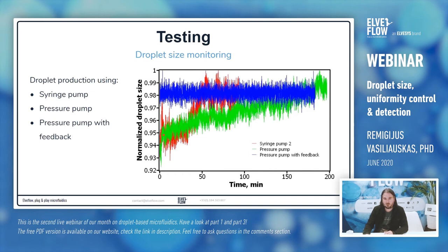Comparing with the pressure pump without any feedback loop, the droplet size variation is quite minimal in the green line. But it still changes over time — if you're collecting droplets for two, three, or five hours, you will see the droplet size drifting. With the pressure pump plus feedback shown in the blue line, it's very stable going for several hours with no changes, allowing you to produce droplets for a very long time.